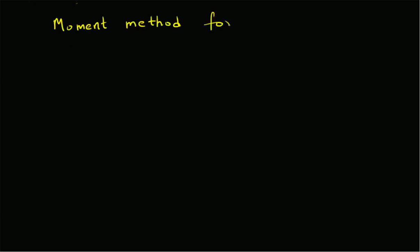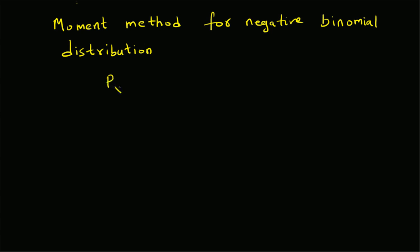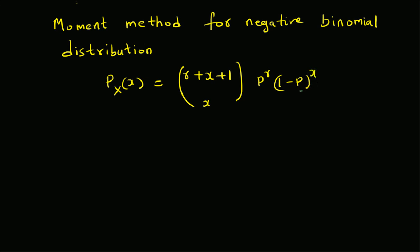Hello, welcome. In this short video, let us look at the moment method for estimation of the parameters of a negative binomial distribution. The probability mass function of this negative binomial distribution is given by p_X(x) equal to the combination of r plus x minus one choose x, then p to the power r, and one minus p to the power x. So obviously x is our random variable, and r and p are the parameters.